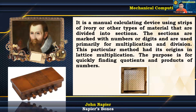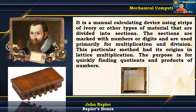It is a manual calculating device using strips of ivory or other materials divided into sections. The sections are marked with numbers or digits and are used primarily for multiplication and division. This particular method had its origins in lattice multiplication, and its purpose is for quickly finding quotients and products of numbers.